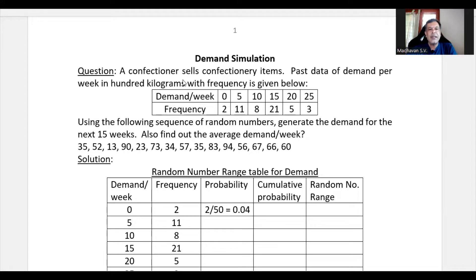A confectioner sells confectionery items. Past data of demand per week in 100 kilograms with frequencies given below. Demand per week is given as 0, 5, 10, 15, 20, 25 and the corresponding frequency is given as 2, 11, 8, 21, 5 and 3.